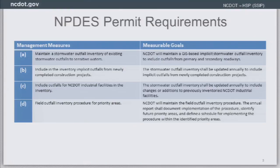The implicit inventory includes any new construction projects, which are updated in the map, and all industrial facilities, which are field-truthed outfalls, as well as discharge points. DOT also develops a field outfall inventory procedure for priority areas, with implementation plans laid out in their annual report each year.